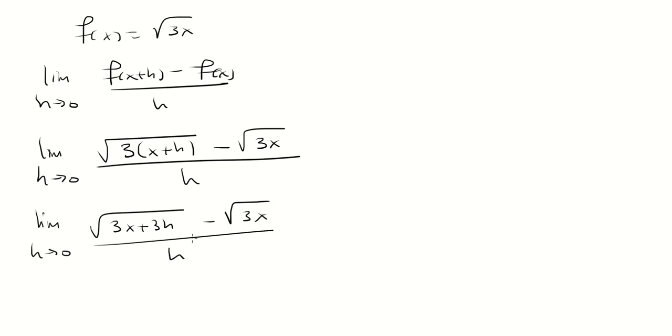...square root of 3x over h. And now I can multiply the top and the bottom by the conjugate, which is square root of 3x plus 3h plus square root of 3x, over the same thing, square root of 3x plus 3h plus square root of 3x.